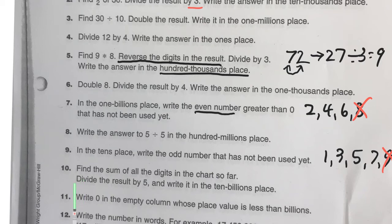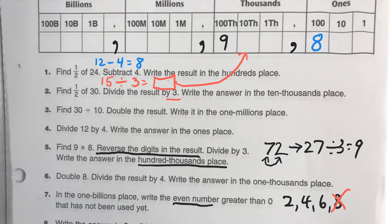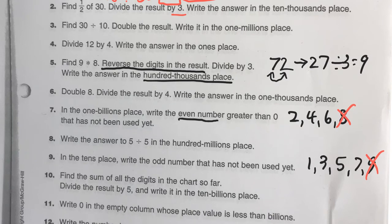And getting even more challenging. Find the sum of all the digits in the chart so far. So, basically, that means you need to go up and add up every single one of these together that you've done so far. So, add these numbers up. And then divide them by 5.